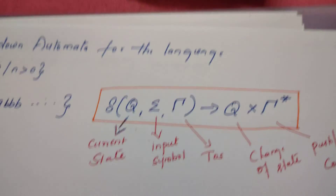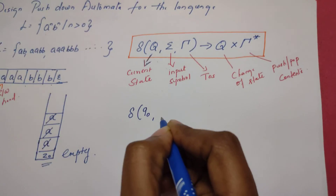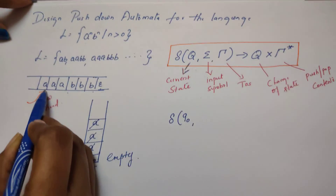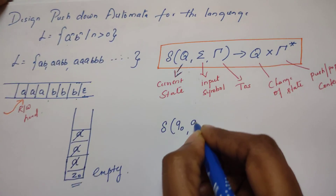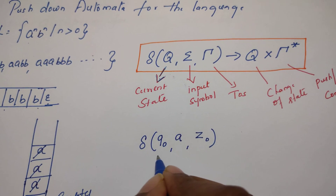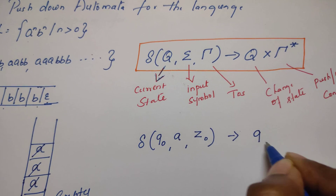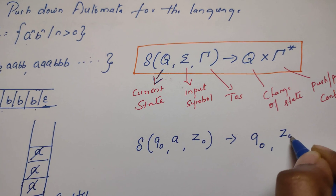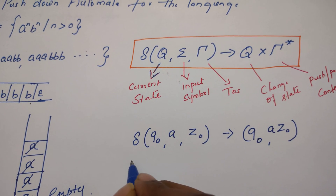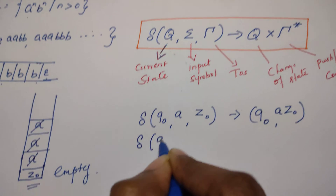Keeping this logic in mind, let us write the transition rules. The initial state of the pushdown automata is q0. From state q0, it reads the very first character of the input tape, which is expected to be 'a'. When it reads the first 'a' and the stack is empty, the PDA continues to stay in q0 and pushes the symbol 'a' above z0 onto the stack.